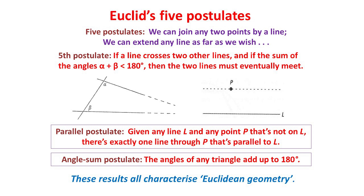But no one ever could. However, by assuming this fifth postulate, they could prove other results. One of these was called the parallel postulate: it says that if L is a line and P is a point not on the line L, then there is exactly one line — shown dotted here — that passes through the point P and is parallel to the line L. Another result that can be proved from the fifth postulate is our result on the sum of the angles of a triangle. And in fact, if we assume any of these three results, we can deduce the other two. They can be said to characterize Euclid's style of geometry, but no one could prove any of them directly from the first four postulates.